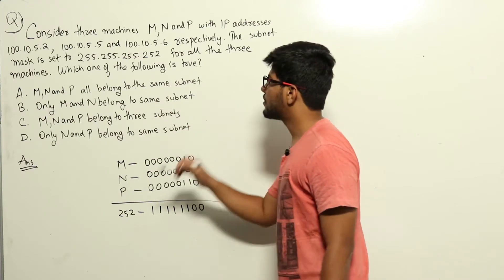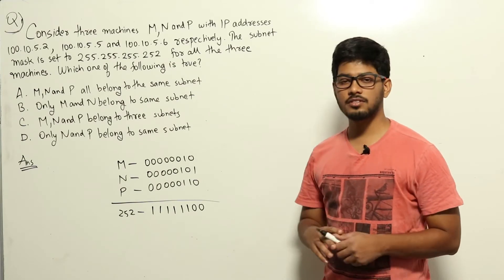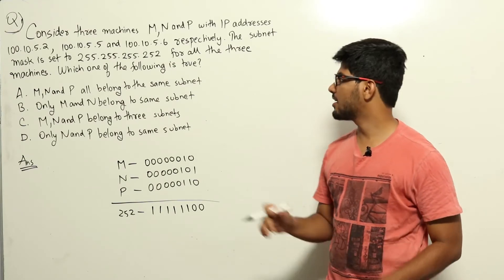Four options are given. We need to find out which among M, N and P belong to the same subnet. This is a question from computer networks topic regarding subnet masks.